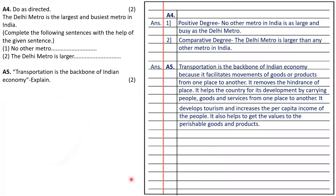The next question is do as directed based on grammar. A sentence is given and you have to write in the positive and comparative degree. Positive degree: no other metro in India is as large and busy as the Delhi Metro. Comparative degree: the Delhi Metro is larger than any other metro in India.